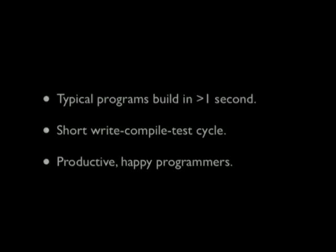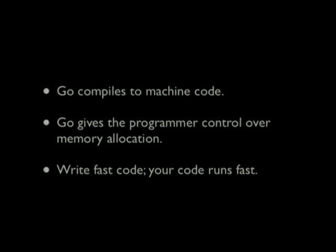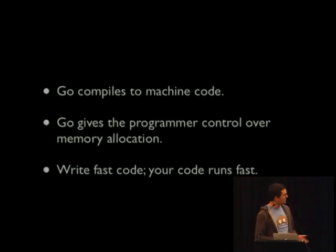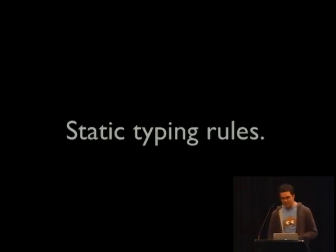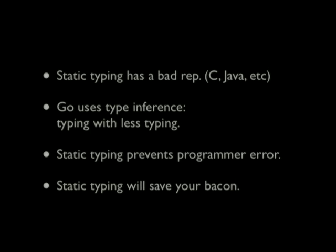Go builds fast. Typical programs build in under one second, giving you a short write-compile-test cycle so you can be productive. Go code runs fast — it compiles to native machine code on a variety of platforms, giving the programmer control over memory allocation and control flow. Static typing has a bad rep, caused by verbose languages like Java, but Go uses type inference — it really takes the typing out of typing. Static typing prevents programmer error. How many times have you written a Python application, tested it, deployed it, and then within seconds seen runtime errors in your logs? These are the kinds of errors that should be caught at compile time.